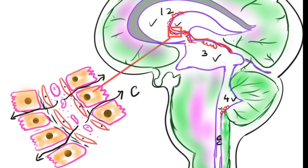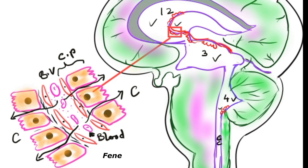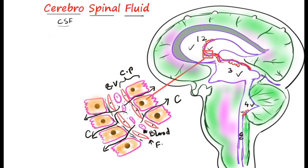The cavity and the blood vessel together form the structure known as the choroid plexus. The blood is present in the blood vessel cavity. These blood vessels, mainly present around the ventricles, are highly fenestrated. The fenestrated blood vessels in this area are where CSF is usually produced and secreted into the cavities or ventricles of the brain.